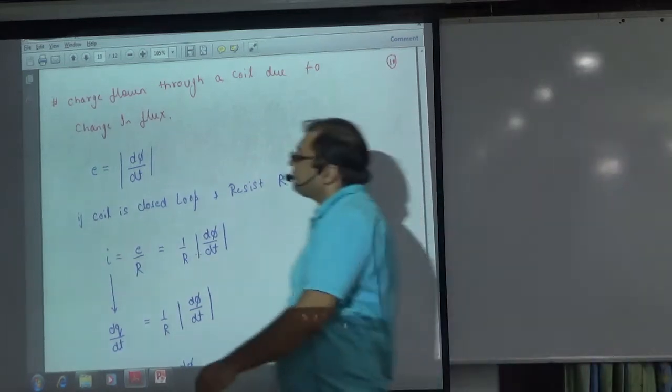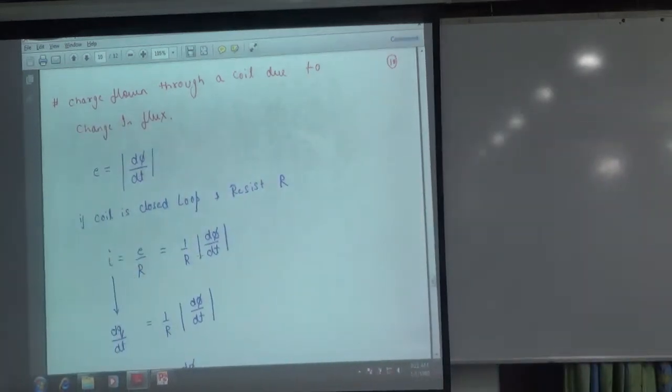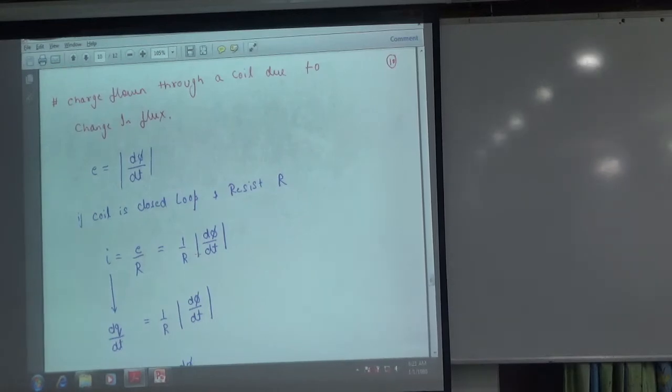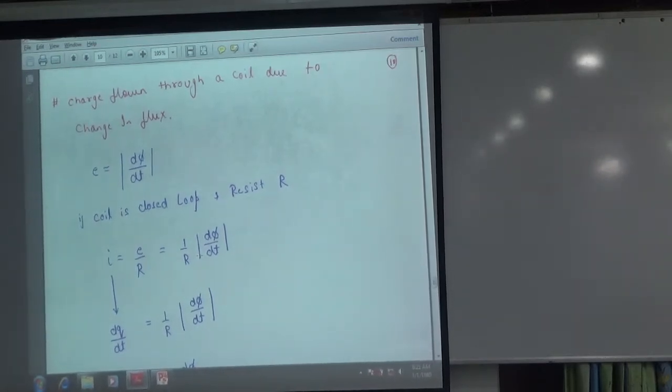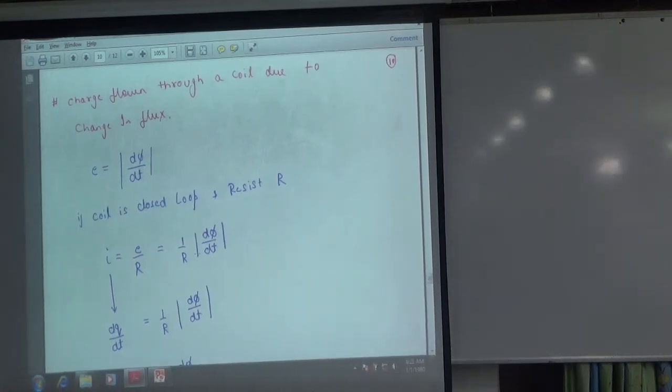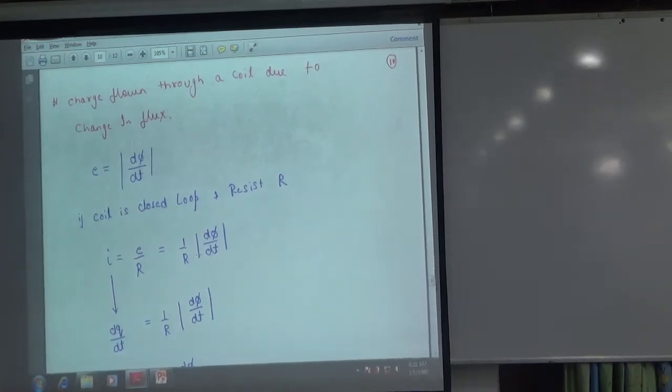Let me write NCERT on it. When you change the current in a ring, there is a current generated. So current generated, there is a charge pass. Current means charge. So how much charge passed? I want to tell you.